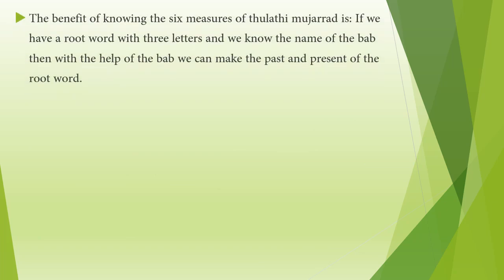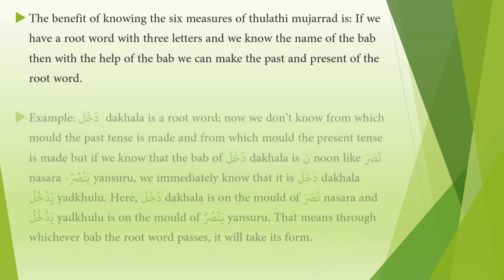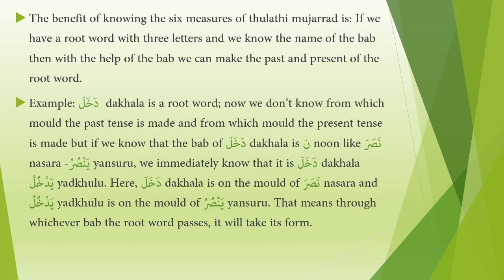The benefit of knowing the six measures of thulathi mujarrad is: if we have a root word with three letters and we know the name of the bab, then with the help of the bab we can make the past and present of the root word. Example: dakhala is a root word. If we know that the bab of dakhala is noon — like nasara/yansuru — we immediately know that it is dakhala/yadkhulu, where dakhala is on the mold of nasara and yadkhulu is on the mold of yansuru. Through whichever bab the root word passes, it will take its form.